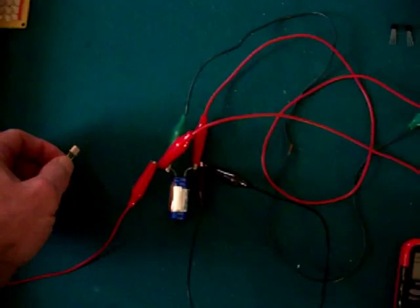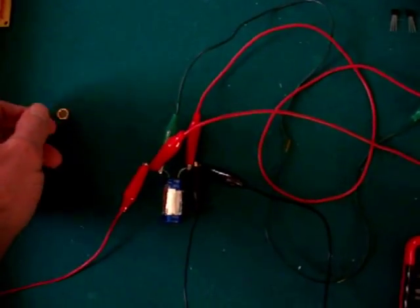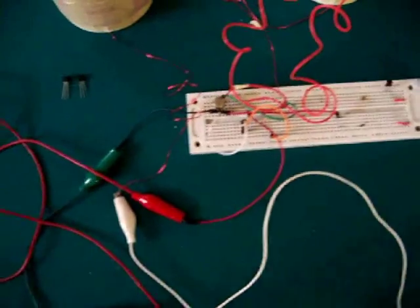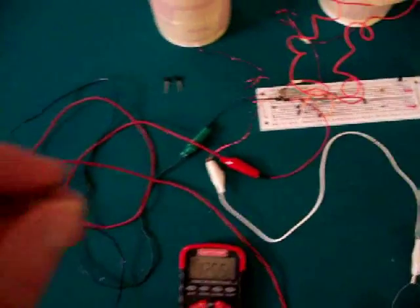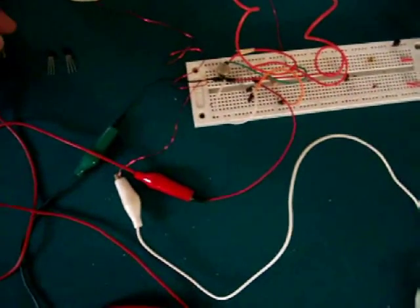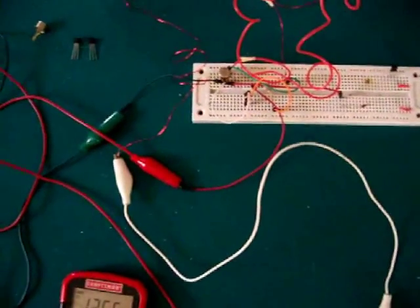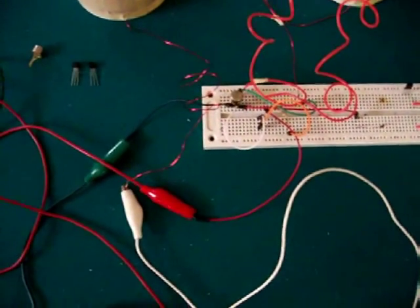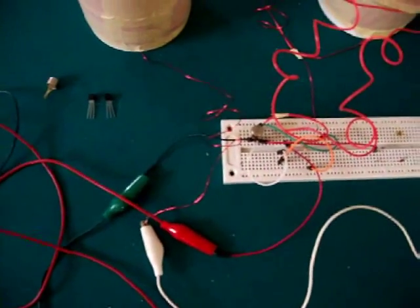I just reversed the polarity on the capacitor here, and I also have the emitter and collector hooked up backwards on it. It works both ways, but running it backwards it uses real low current. I had it working as low as 30 milliamps.